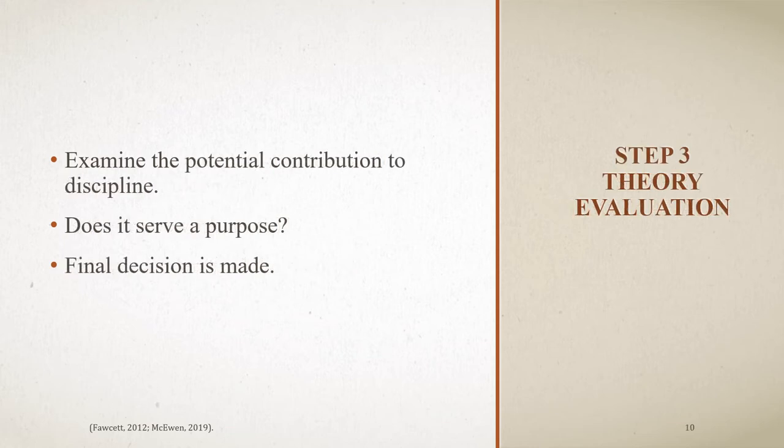This brings us to our final step, step three of theory evaluation. This is when we examine the potential contribution to the discipline. You ask yourself: does it serve a purpose? Are there favorable outcomes? This is when the final decision is made. In the event that the final decision is no, it challenges the creator to go back to the drawing board — either start from scratch, or clarify or modify the theory. It makes me wonder: how many times theory evaluations fail, and does it make theories stronger or create new ones?